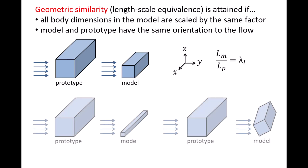Now let's look at two examples of where the model and prototype do not have geometric similarity. On the left, the width and height of the model are scaled down by the same factor, but the length into the page is identical to the prototype, so all lengths are not scaled by the same factor. On the right, the model has been scaled down by the same factor in all dimensions, but it has a different orientation relative to the flow compared to the prototype.